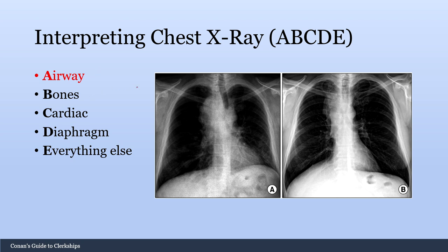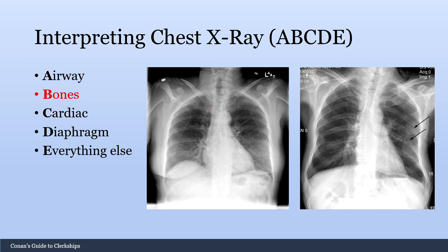A stands for airway. Check to make sure the trachea is midline, or note if it's deviated — as in this patient where the trachea is deviated due to a mediastinal mass. B is for bones. If you jump directly to the lung fields, you might miss important findings such as a clavicle fracture or rib fractures. Always check the bones before moving on to everything else.